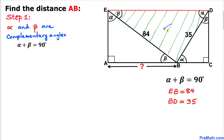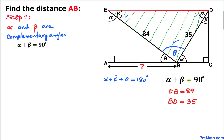Now let's focus on triangle EBD. The sum of the angles is 180 degrees. If I call this angle theta, then angle alpha plus angle beta plus angle theta must equal 180 degrees. But we know alpha plus beta equals 90 degrees, so I replace alpha plus beta with 90 degrees, giving us 90 plus theta equals 180 degrees.